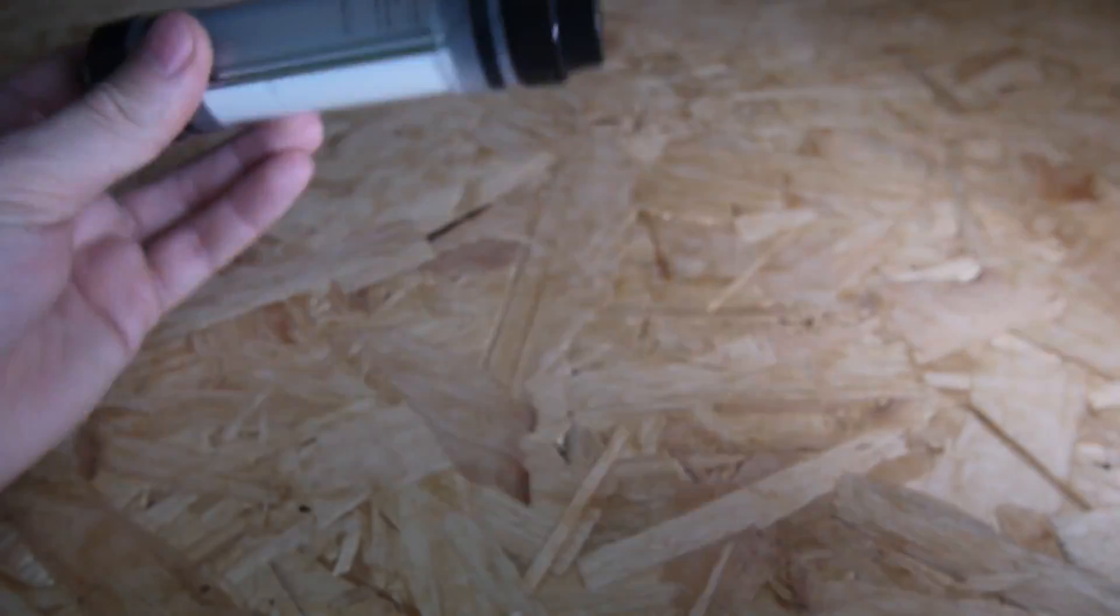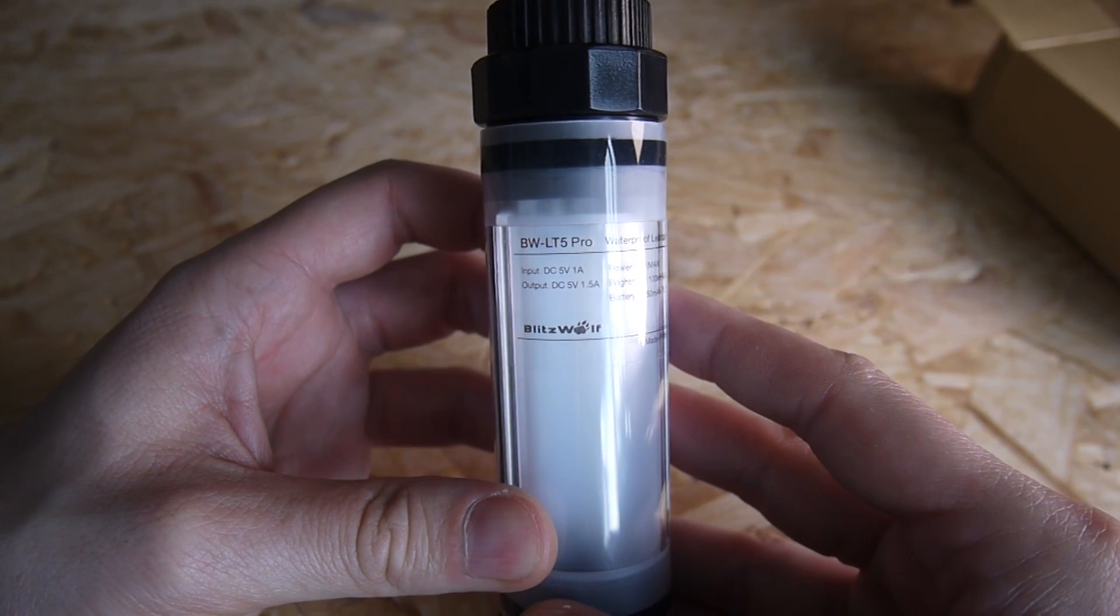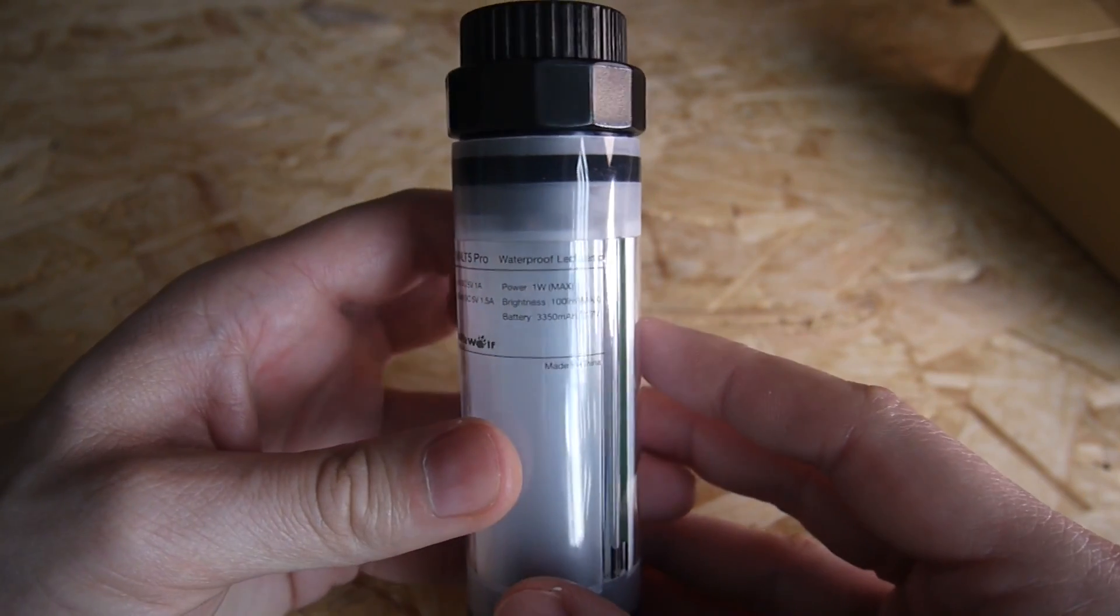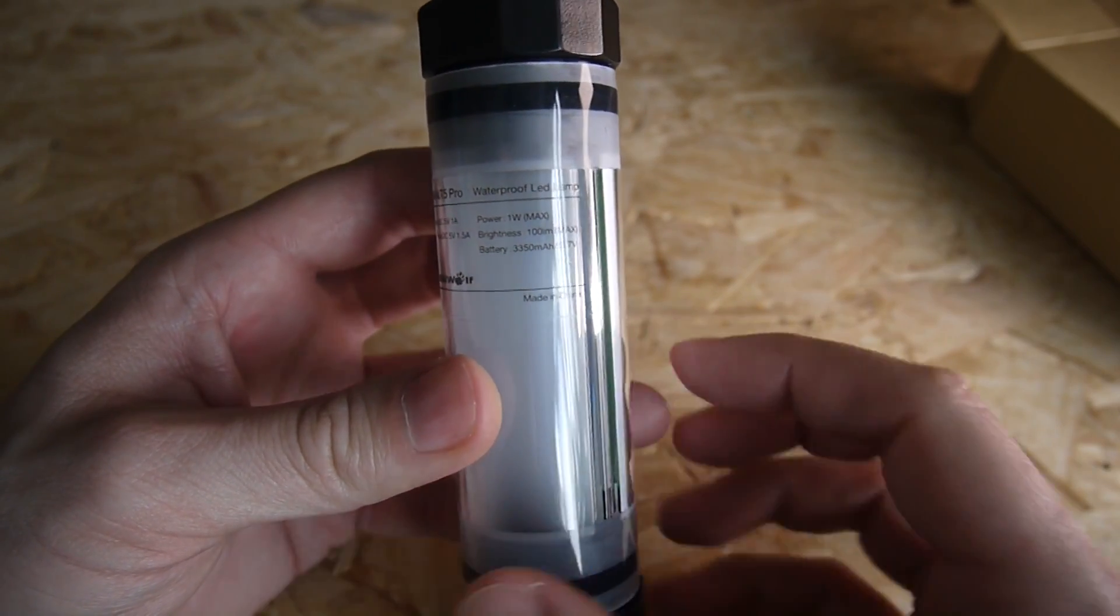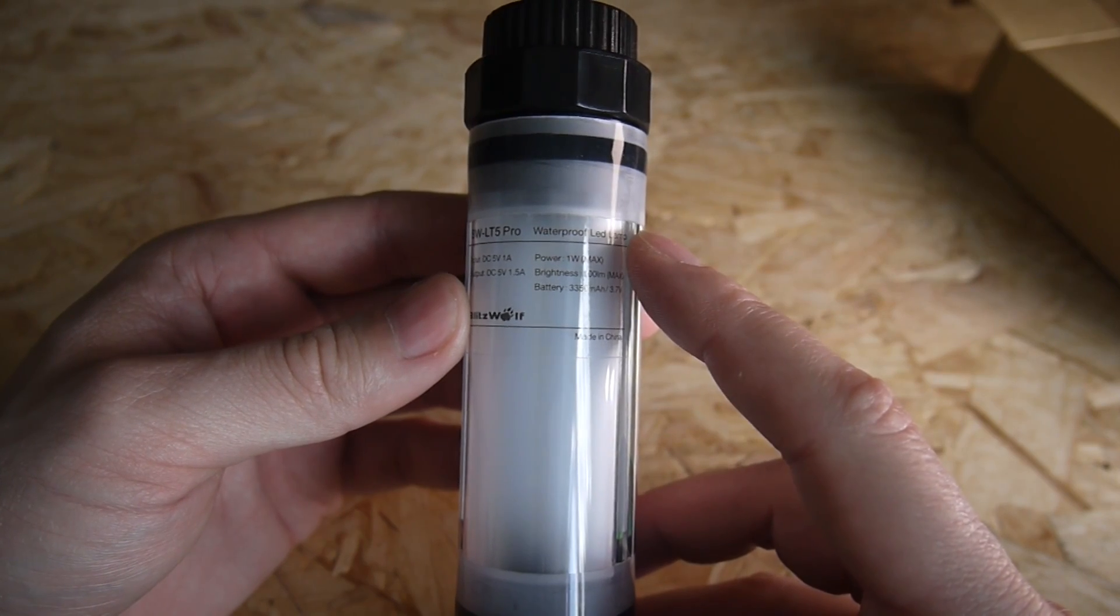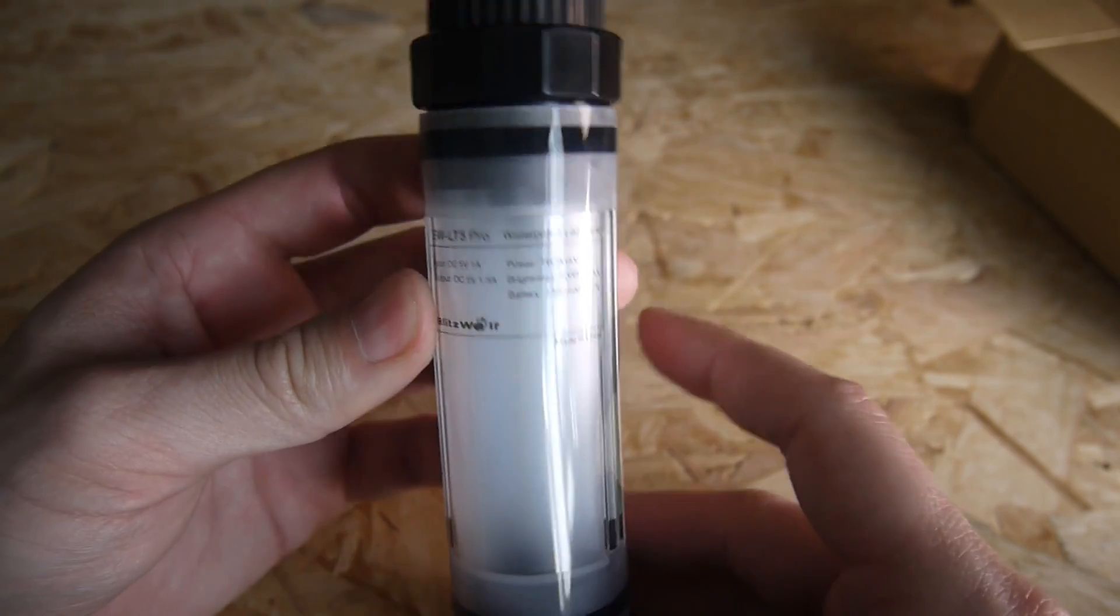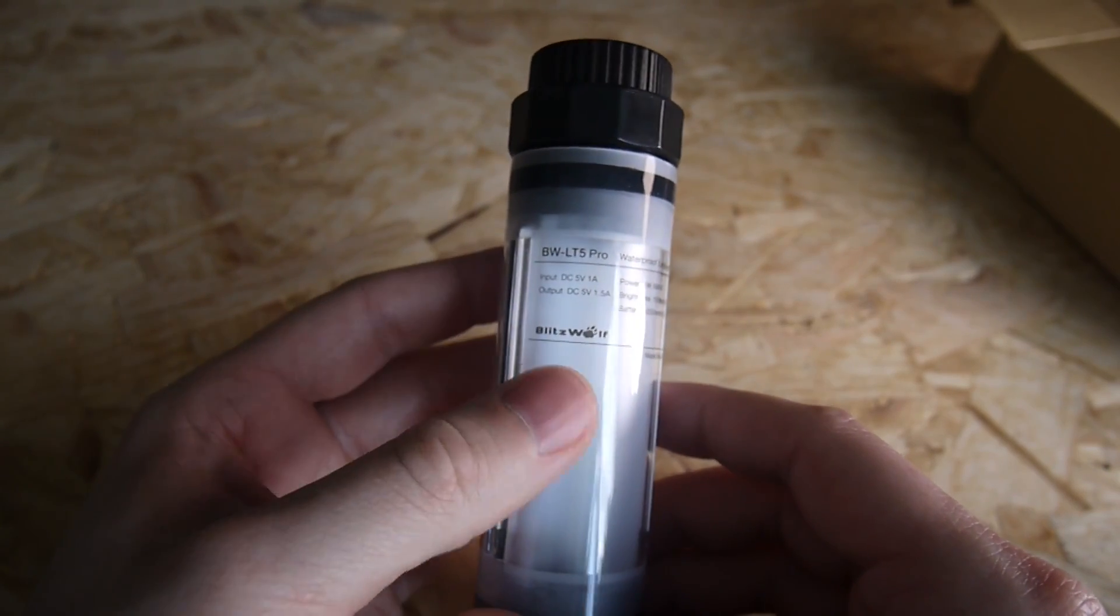So this is the Blitzwolf BW-LT5 Pro waterproof LED lamp. It's also a power bank as well. And I've read a few good reviews on the internet about this, so I was quite interested to get one. And I've got to say, I'm pretty impressed with it actually.